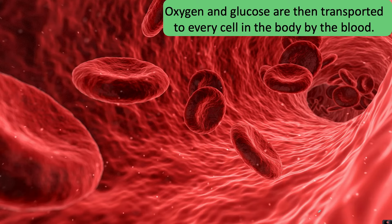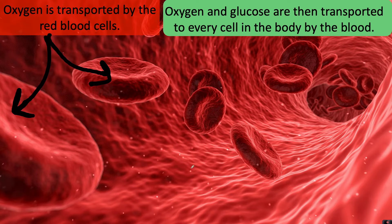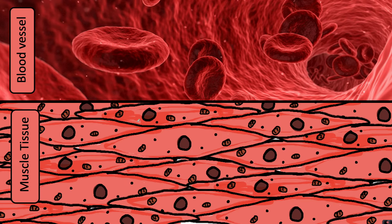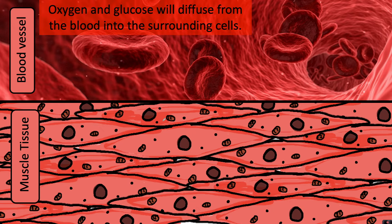Oxygen and glucose are transported to every cell in the body by the blood. Oxygen is transported by the red blood cells — it binds to them. Glucose, however, is transported in the blood plasma and does not bind to red blood cells. When the blood arrives at, for example, a muscle, both oxygen and glucose diffuse from the blood into the surrounding muscle cells — oxygen from the red blood cells and glucose from the blood plasma.